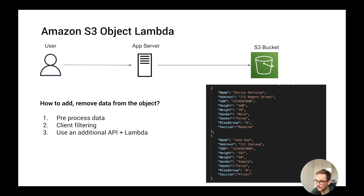To solve this, AWS designed a new way to pre-process the object that is in S3 and give it back as you want it to the client side. For this purpose, they invented the S3 Object Lambda feature. Let's go to the next slide and see how it works.